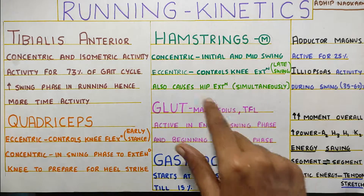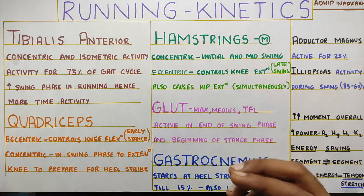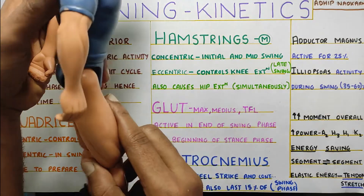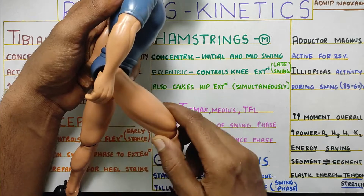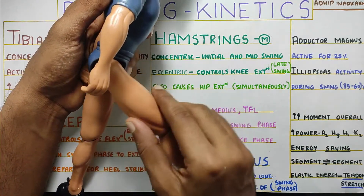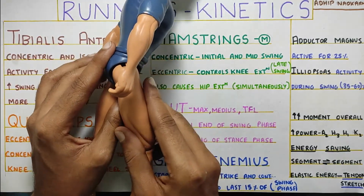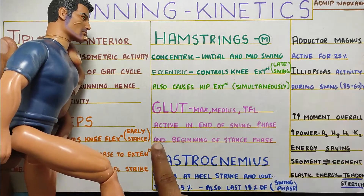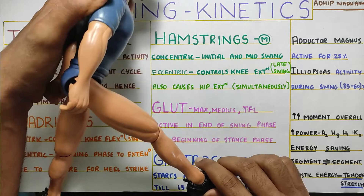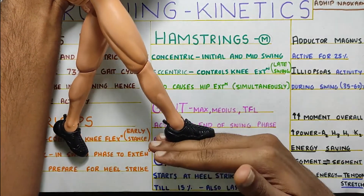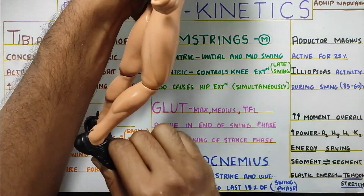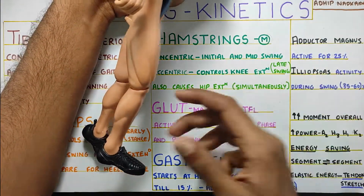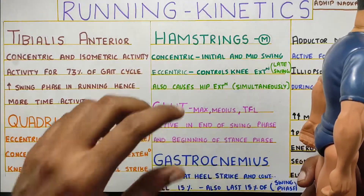First we will go from top to bottom. So first, glutes — glute maximus, medius and TFL. All of them have a similar job: they are active in the end part of the swing phase. That means when you are swinging your leg ahead, you need to slow down, and your glutes will activate through eccentric activity. As your hip is going into flexion, the glutes will lengthen and control that flexion. And along with that, at the beginning of the stance phase, when your foot is on the ground and you are pushing yourself forward, hip extension is happening, and your glutes will fire up — all the hip extensors help you push yourself forward.